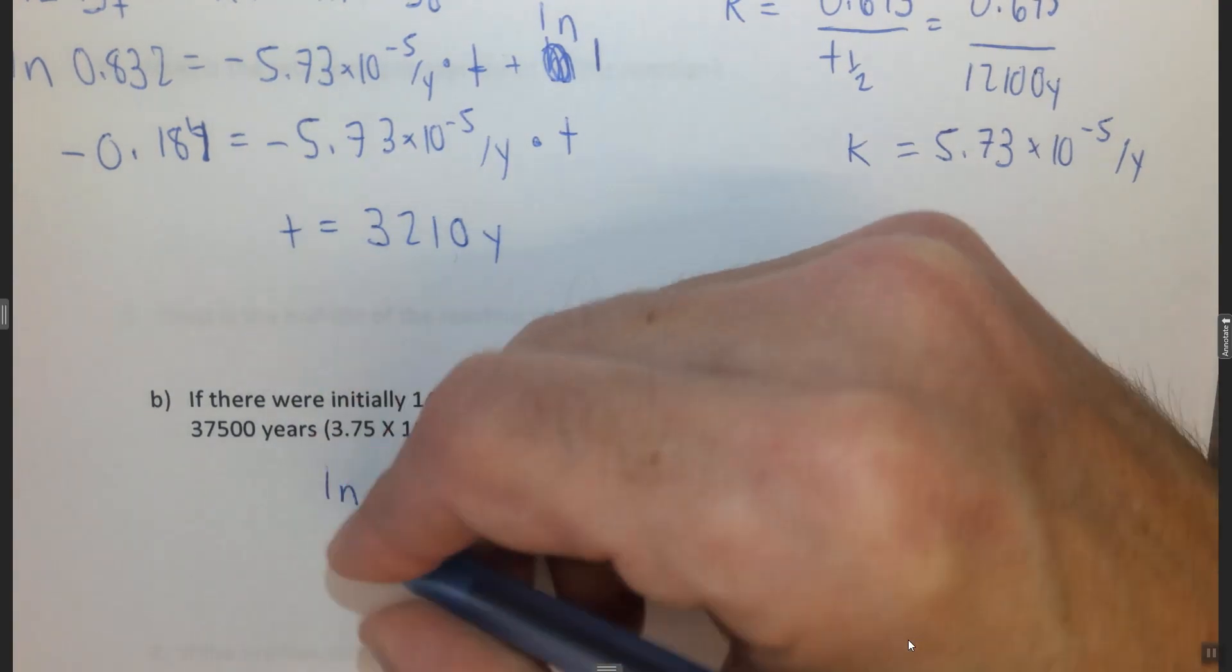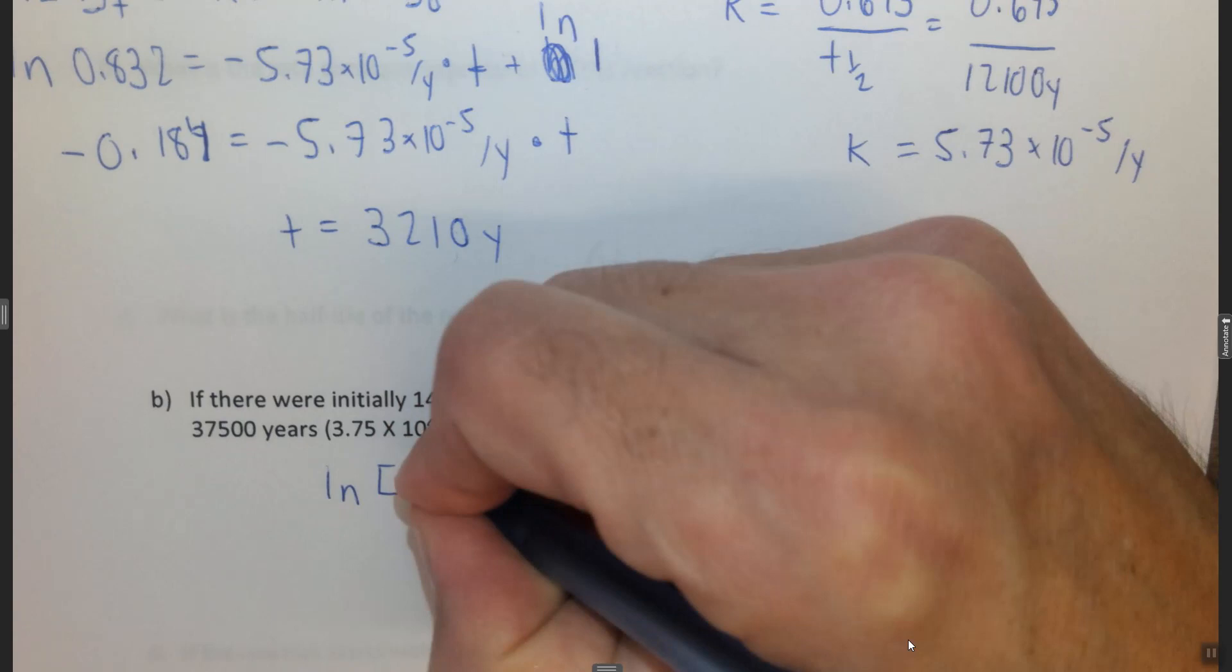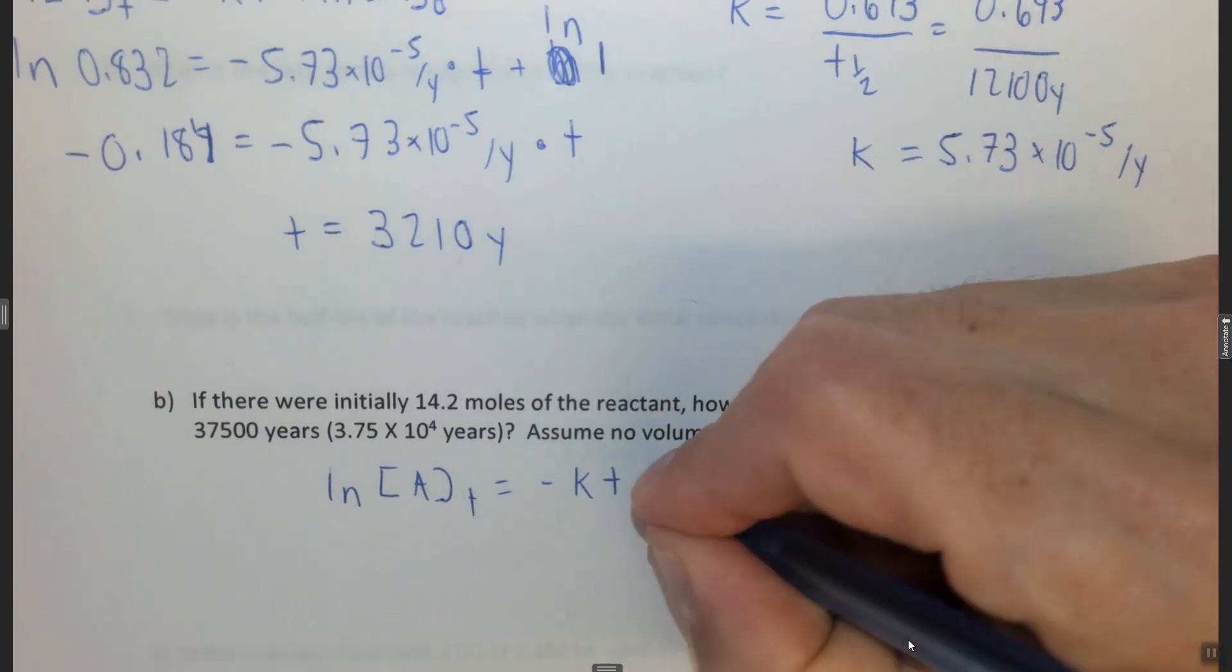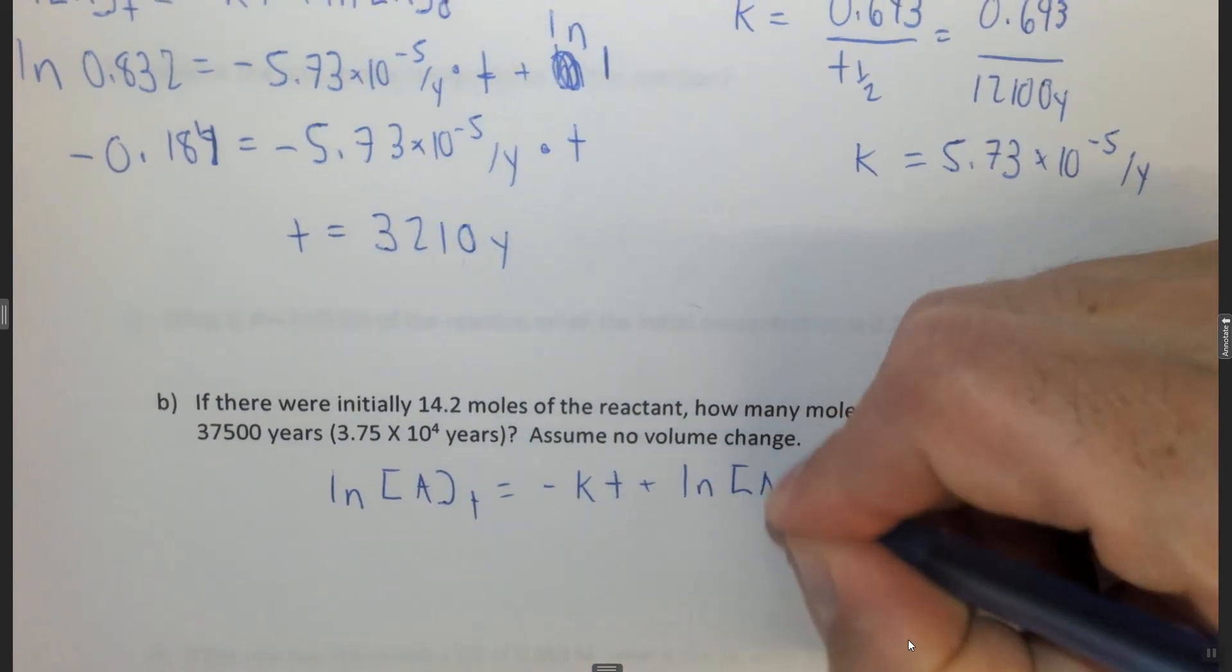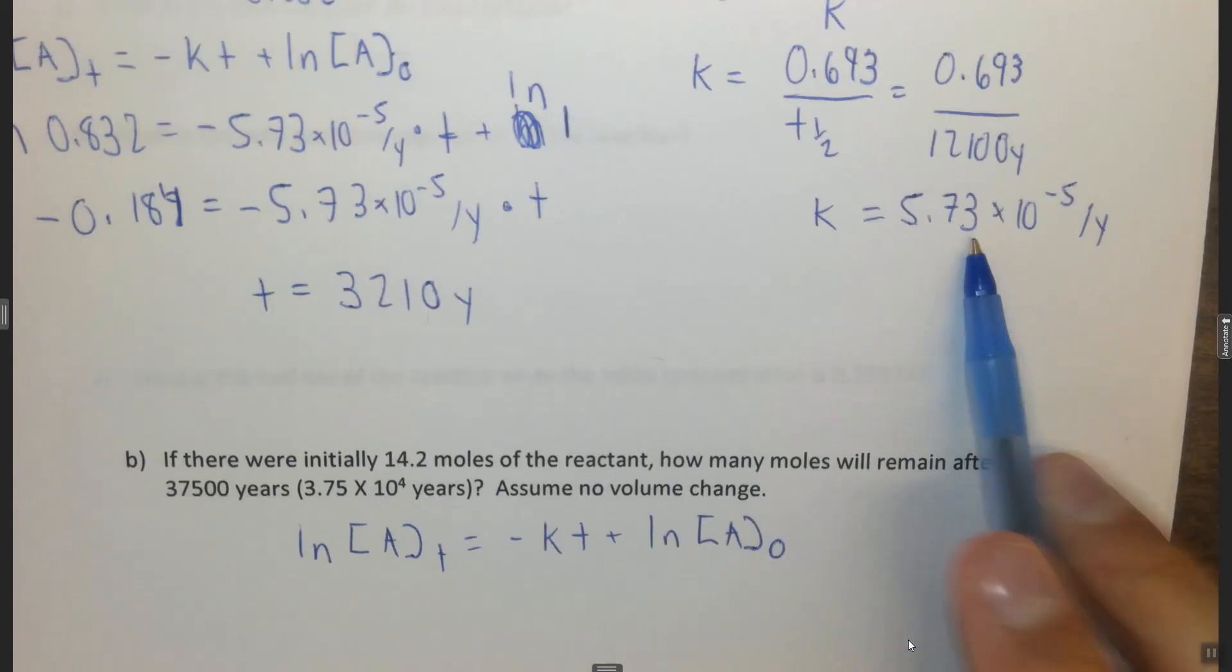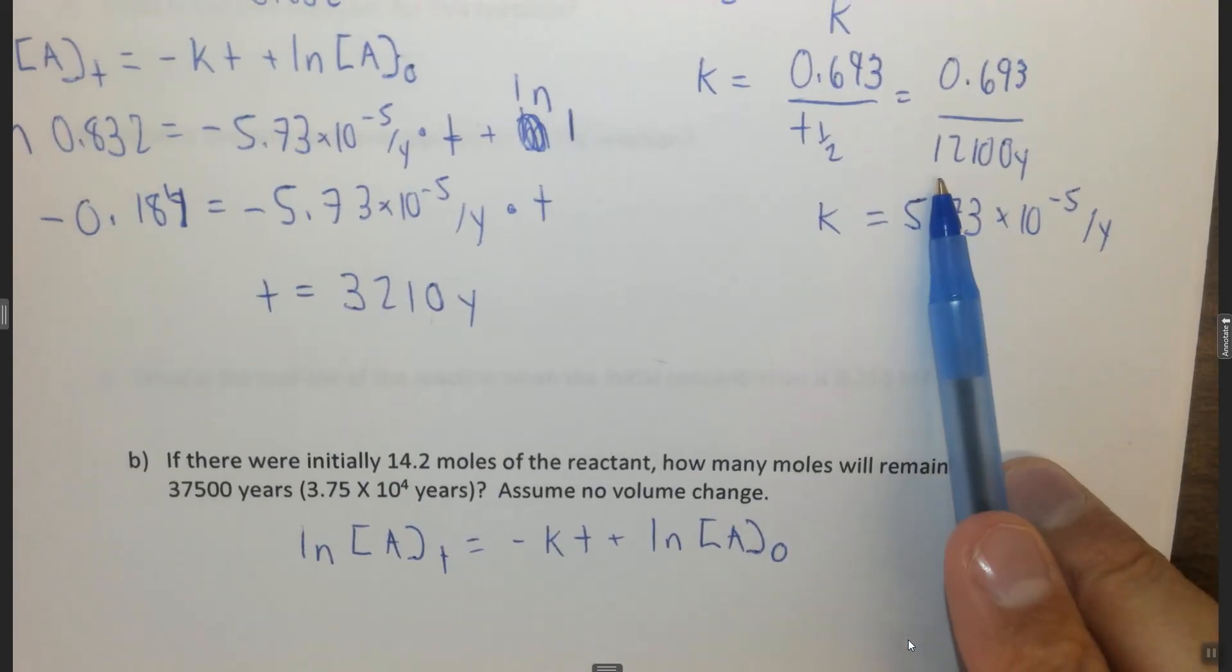We want to again use the integrated first-order rate law, which in this case is ln of the concentration of A at some t equals negative kt plus the ln of the initial concentration of A. Note that we found k in the previous part.